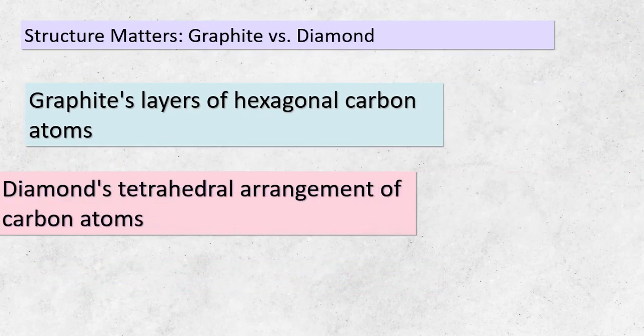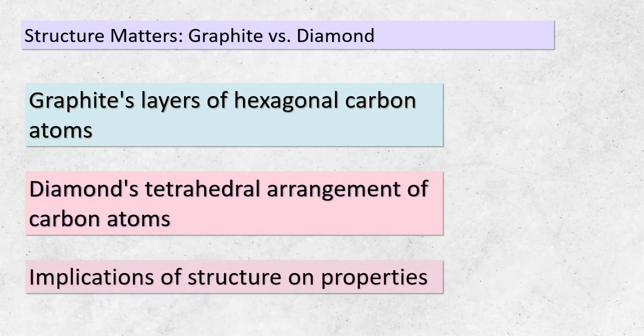Our fifth topic brings us face to face with the captivating structural disparities between graphite and diamond. Graphite showcases its layered structure, where hexagonal carbon atoms arrange themselves in an organized fashion. Diamond, on the other hand, boasts a tetrahedral arrangement where each carbon atom is bonded to four others in a three-dimensional lattice. These structural variations are at the core of the diverse properties these materials exhibit.